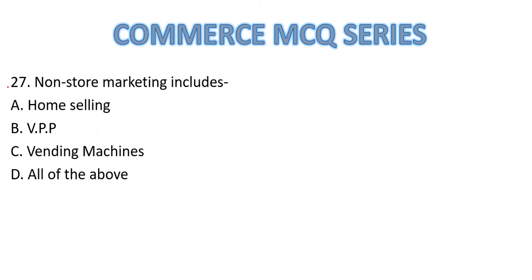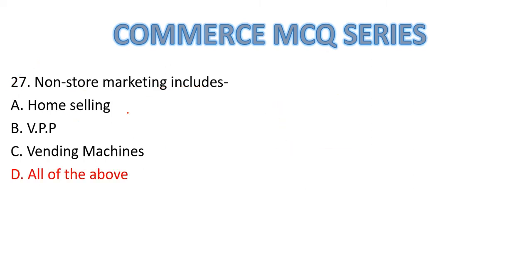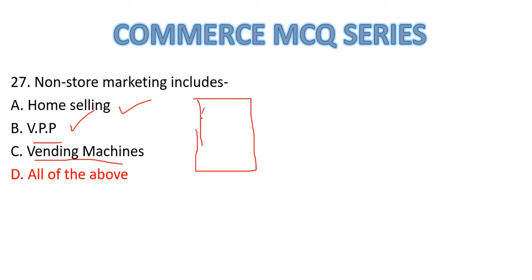Question Number 27: Non-store marketing includes home selling, VPP selling, and vending machines. Non-store means you don't have to sit in a store. In home selling, a salesman comes to your home. Vending machines — seen at stations with cold drinks — you enter a number and the product comes out. These are all examples of non-store marketing.